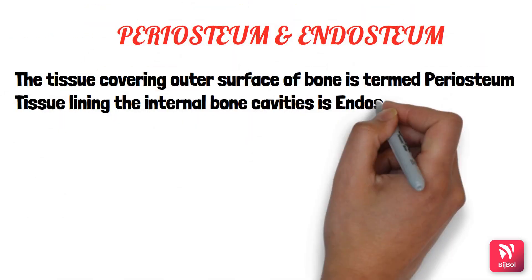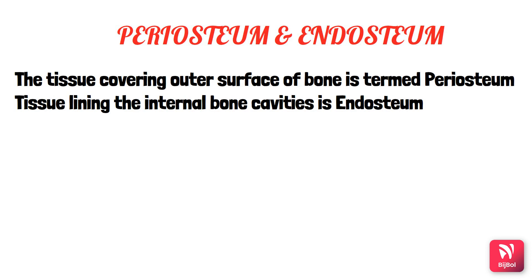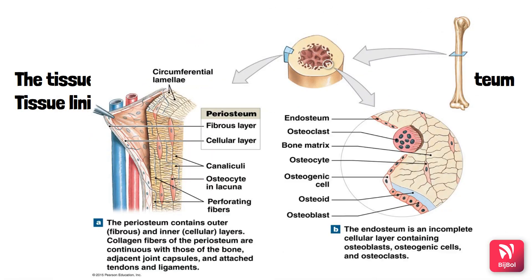The tissue covering the outer surface of the bone is called the periosteum, whereas the tissue lining the internal bone cavities is called the endosteum. In the pictures, you can appreciate the periosteum as the outer covering of the bone, and the endosteum covering the internal cavity of the bone.